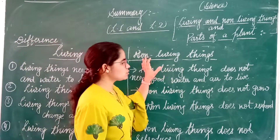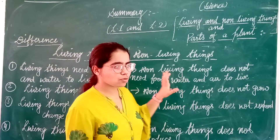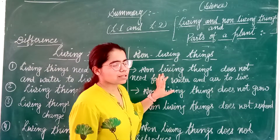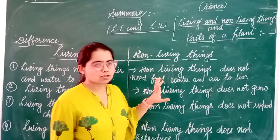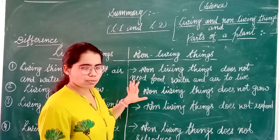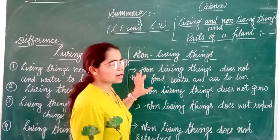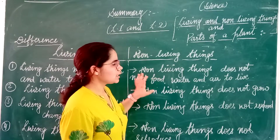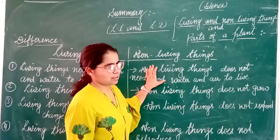Non-living things do not need food, water, and air to live. They do not move, they do not reproduce, they do not breathe, and their height and weight are constant. These are called non-living things.